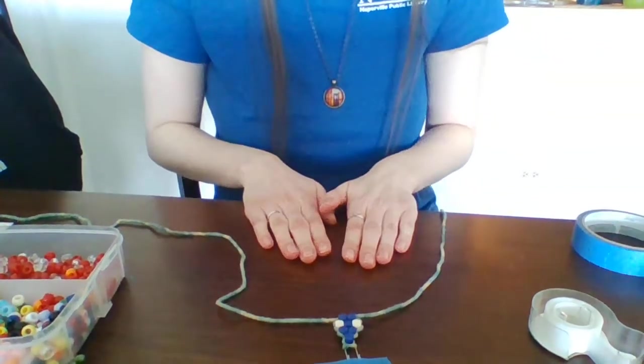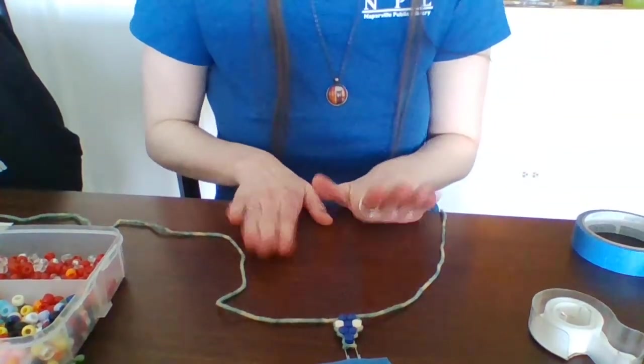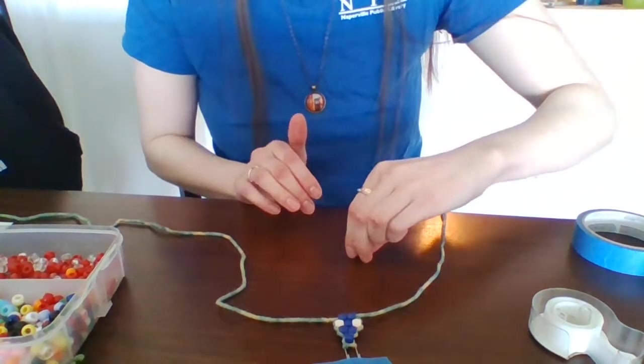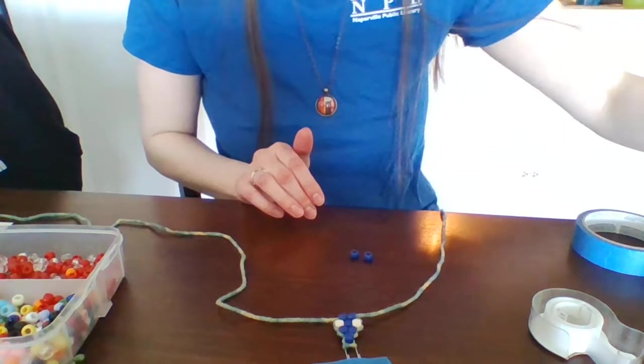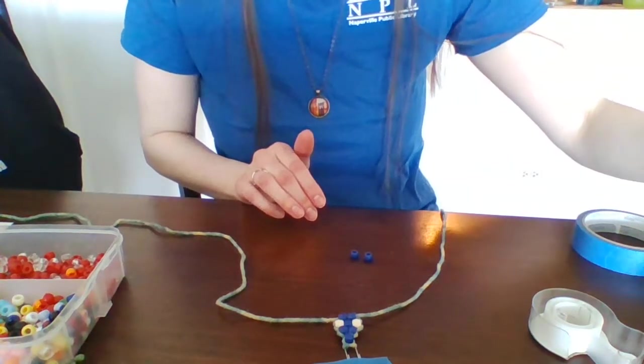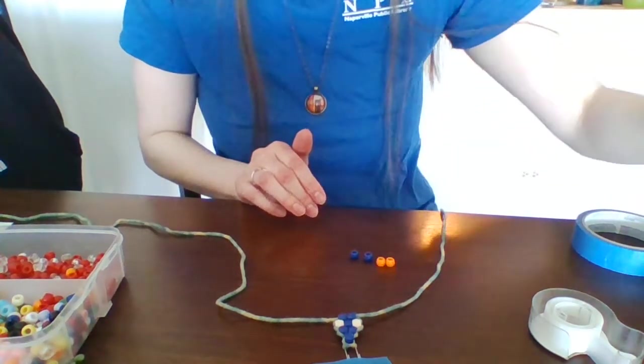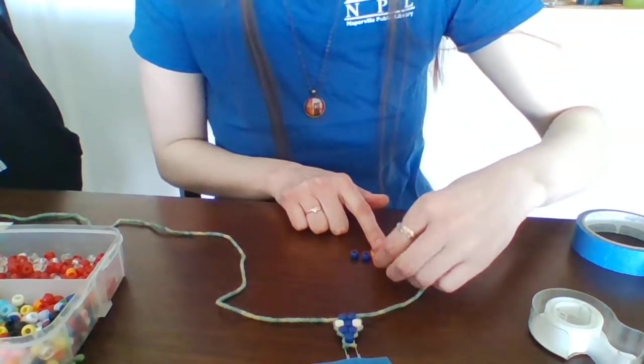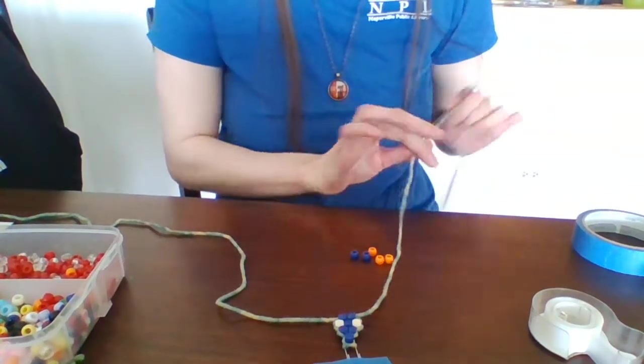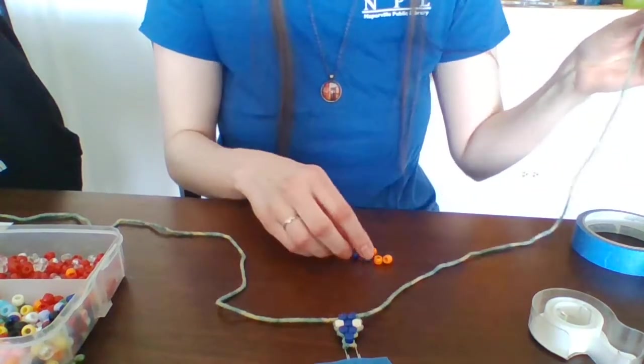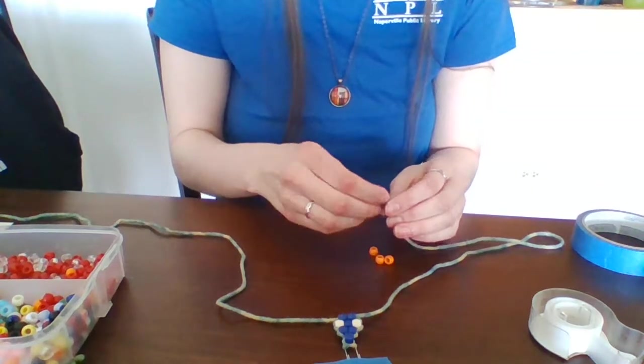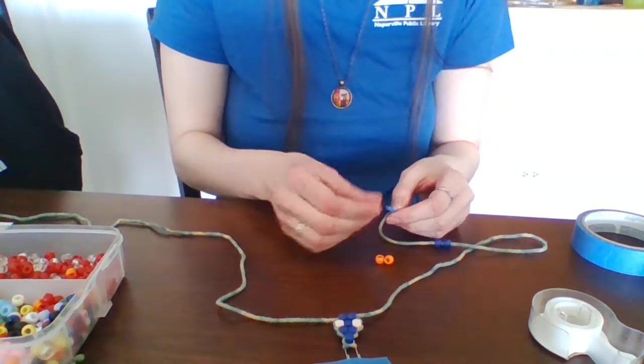Now this will be the first time we work on the legs and this one is going to be a little bit different. But first I need you to grab two body beads and three of your hand and feet beads. So in my case I have two dark blue and three of the orange. Now for the hands and legs you will only use one string at a time. You're going to put two body beads first and then you're going to put the three hand beads.